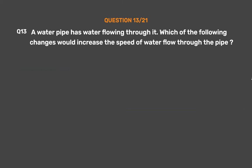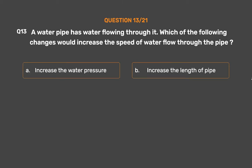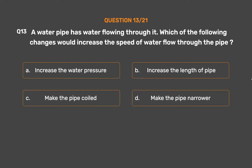Question No. 13. A water pipe has water flowing through it. Which of the following changes would increase the speed of water flow through the pipe? Option A: Increase the water pressure. Option B: Increase the length of pipe. Option C: Make the pipe coiled. Option D: Make the pipe narrower.